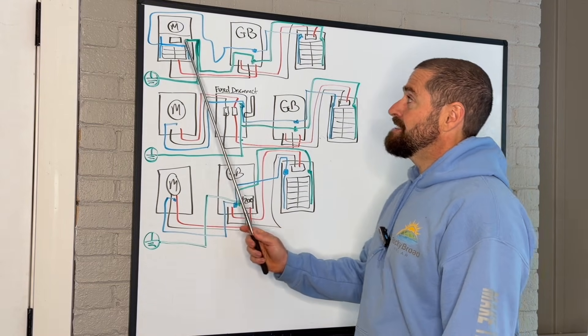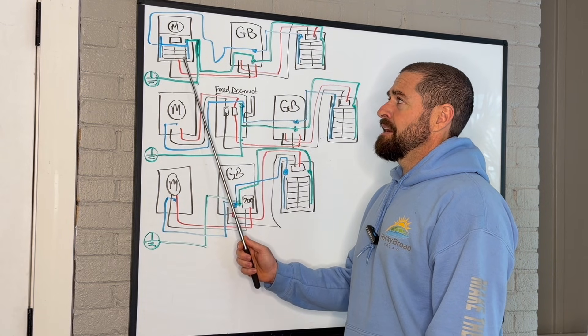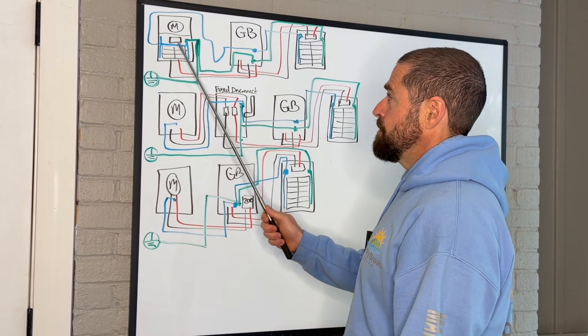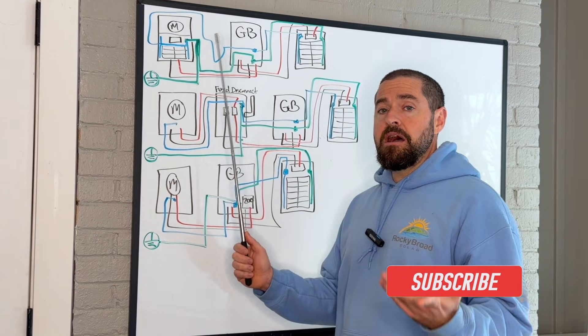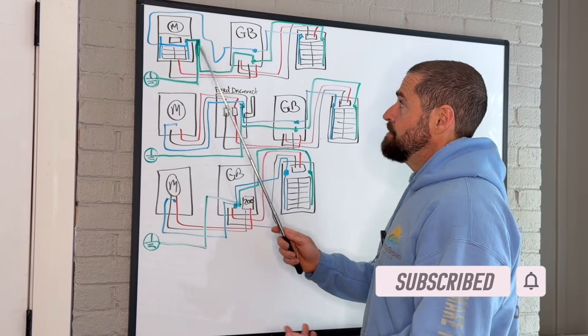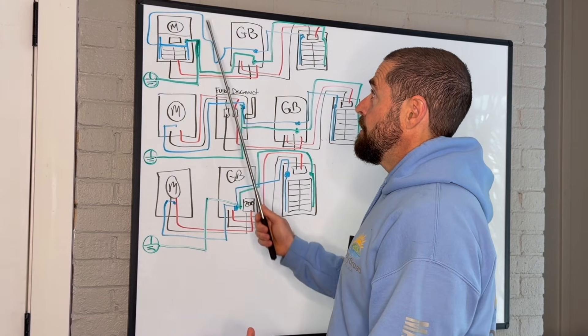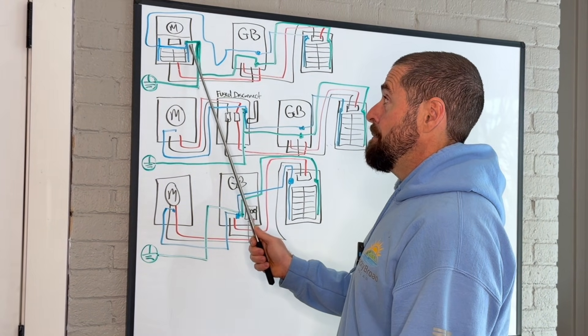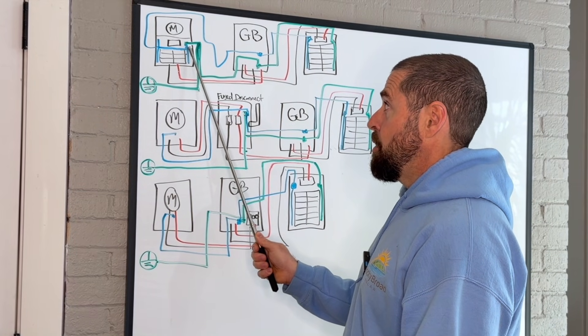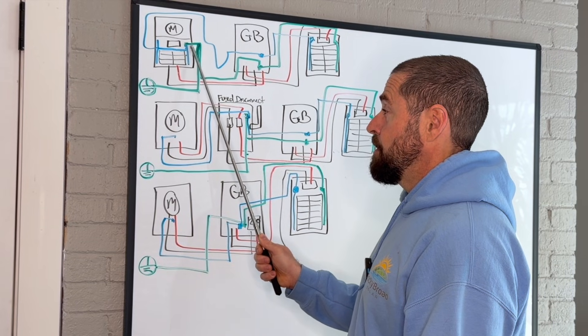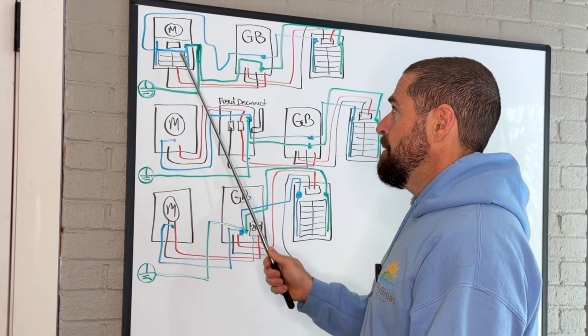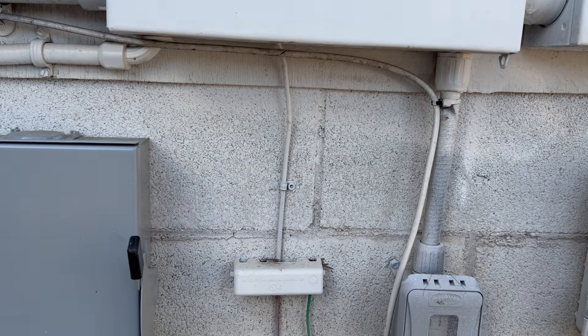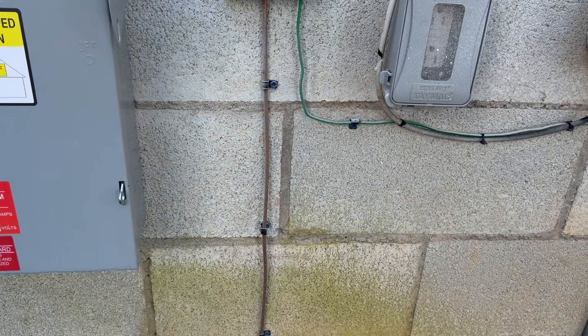First we're going to go over someone that's got a combination meter load center or a meter main. A meter main is basically just a meter and a main breaker all in one unit, while the combo meter also has room for branch circuit breakers. These are very common throughout the country. At your meter main or your combo meter, you're going to have your line one, line two, and neutral wires coming in from the utility, and that is where your equipment grounding conductor and your neutral bus bar are bonded. That's what's called your ground to neutral bond. That happens in this combo meter because this meter is the first disconnecting means of the service. That's also where your grounding electrode conductor is going to be connected to your ground rods.